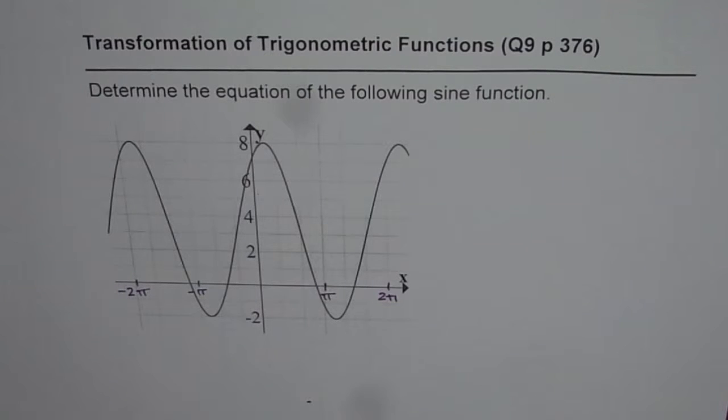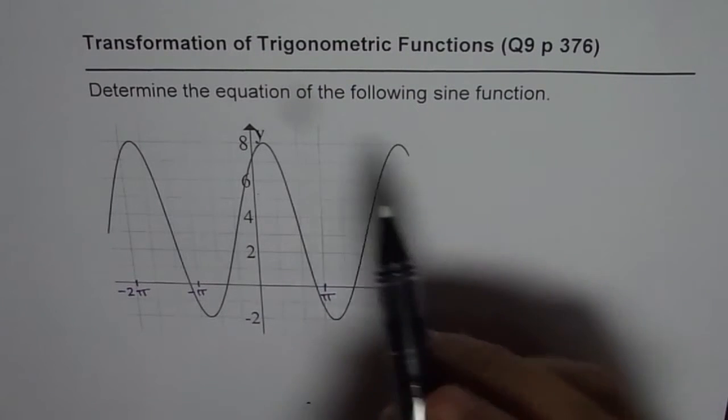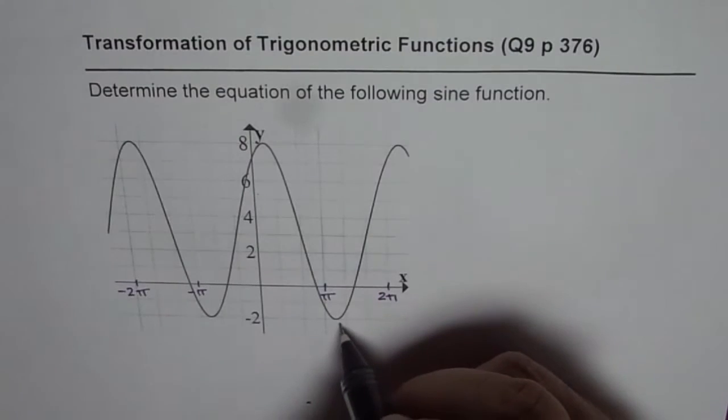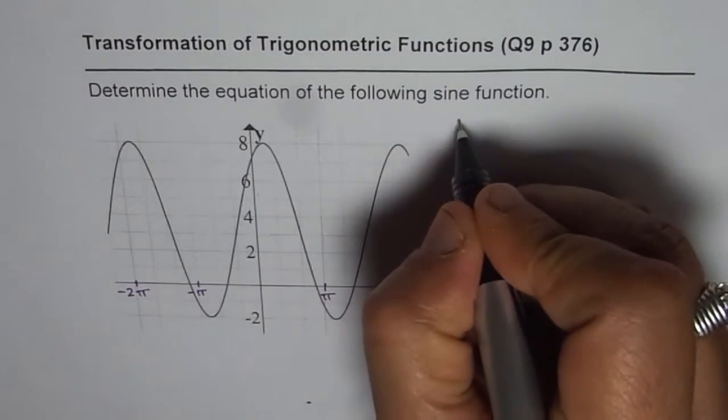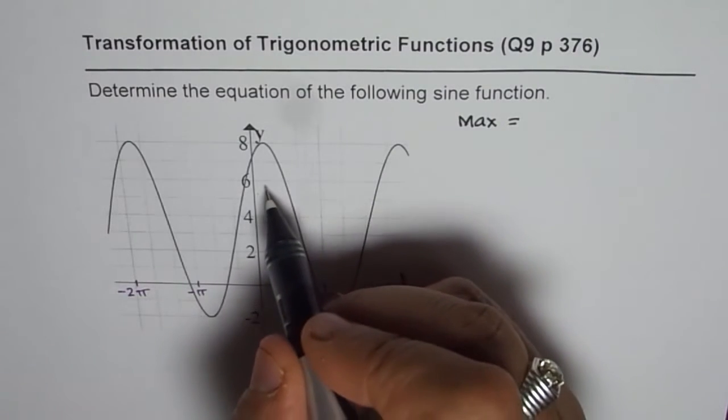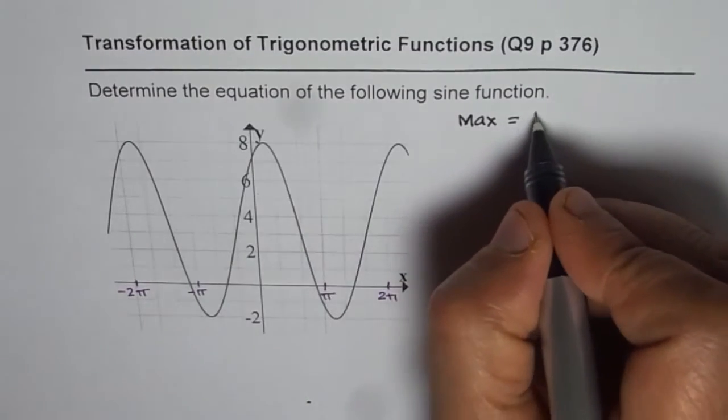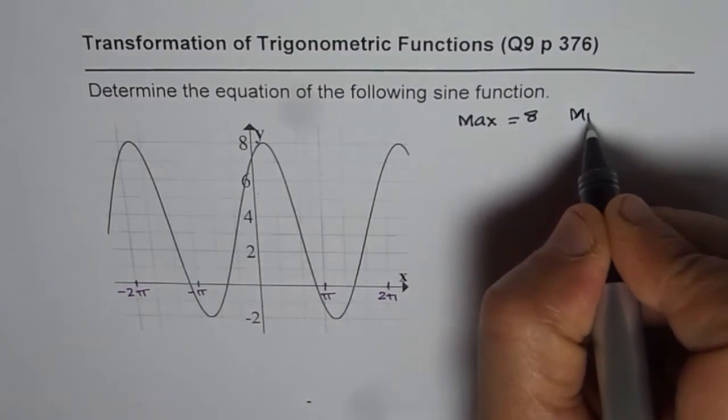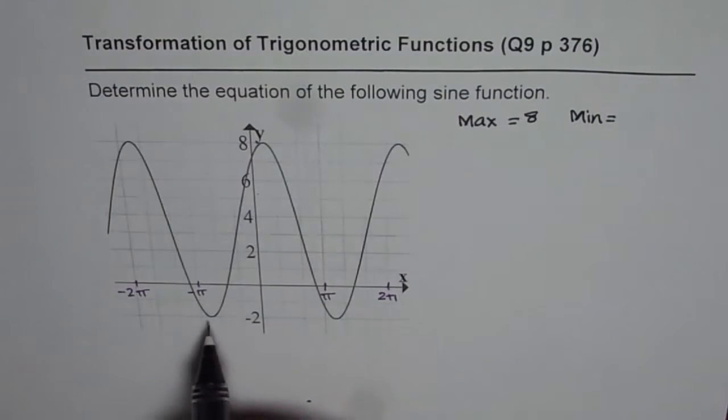To find the equation of a sine function or a cosine function, what is important is to find first maximum and minimum value. So for the given function, maximum value is equal to, in this case, 8. Minimum value is equal to minus 2.